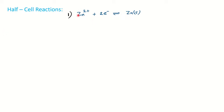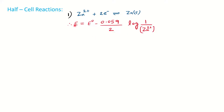Now, how to write down the half-cell reaction — we will see some examples. You have one species called Zn²⁺ which is going to reduce into Zn. Since it is absorbing the electron, Zn²⁺ is called the oxidizing agent, while Zn solid is considered the reducing agent. To write the reduction potential: E = E° minus (0.059 / n), where n is 2. Log of 1 (for solid) divided by the concentration of Zn²⁺ — we write concentration only for ions.